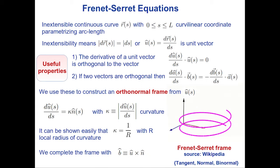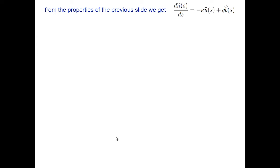From the properties of unit vectors, we can show that the derivative of the normal n with respect to s is orthogonal to n, so it has components only along u and b. The second property tells us the component along u must equal −κ (minus the curvature), and there is generically a component q in the binormal direction.